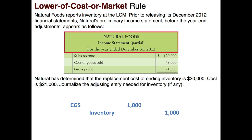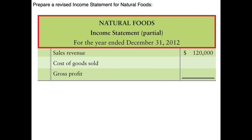Now that we've made this journal entry, it's going to affect our income statement. It's going to increase our cost of goods sold by one thousand dollars, so we would recreate our income statement. Our sales revenue remains at one hundred twenty thousand — that was not affected — but our cost of goods sold increased by one thousand dollars to fifty thousand dollars, bringing us to a new gross profit of seventy thousand dollars.